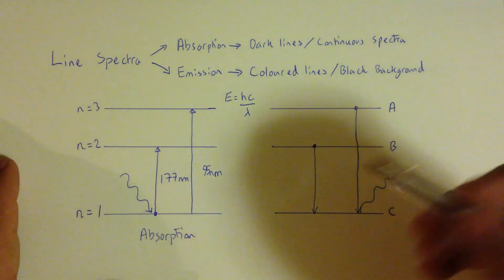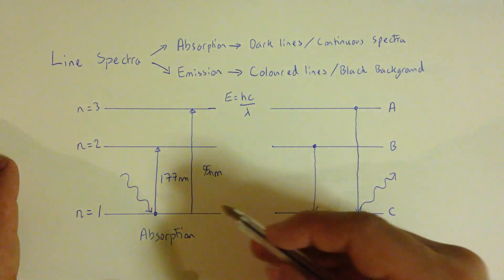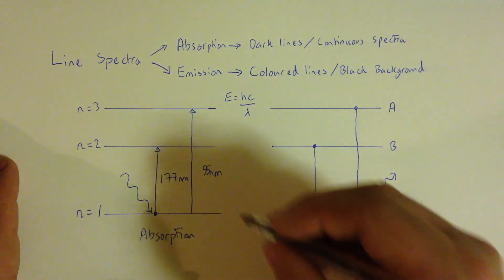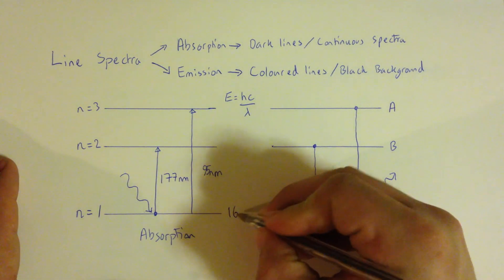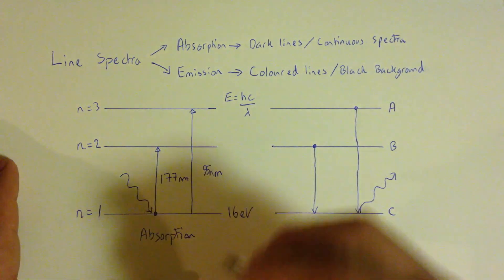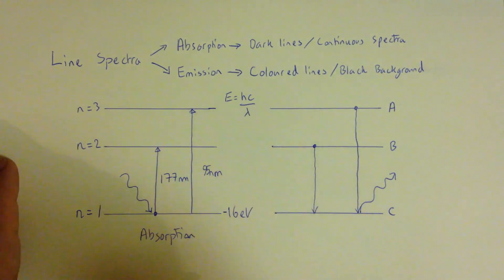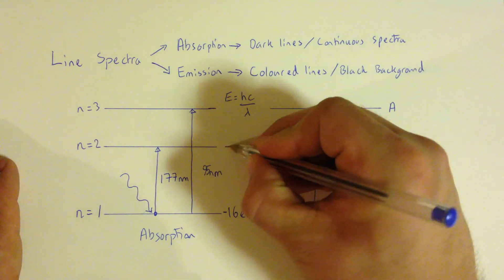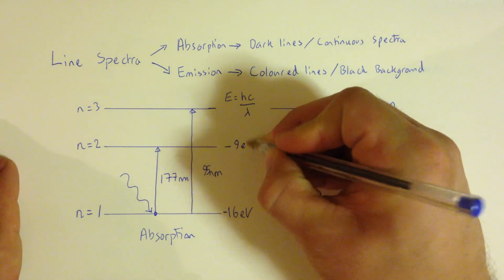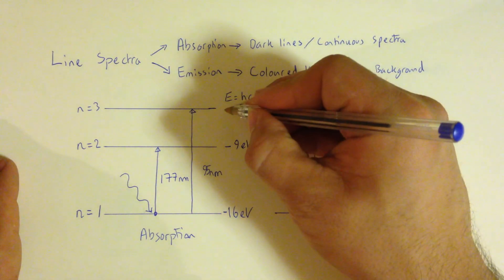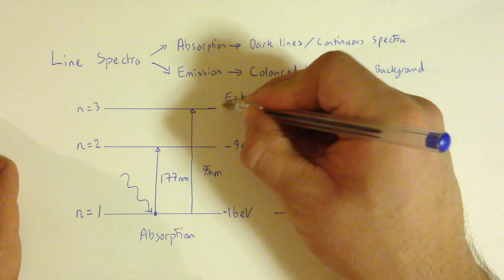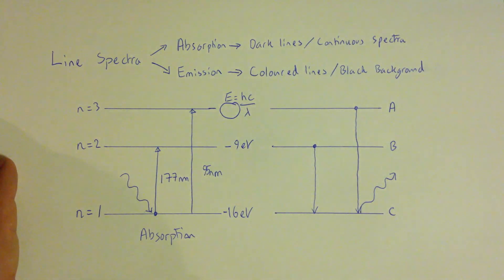So the question could be, if I know the energies of each of these, so, for example, if this is 16 electron volts, or minus 16 because the electron's trapped within the potential of the atom, and this could be 9 electron volts, the question could therefore be, well, what energy does energy level A have?